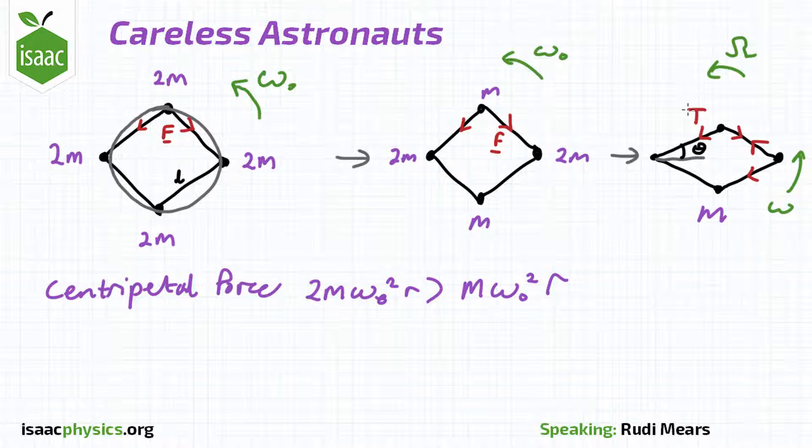From here, we just need to consider the centripetal force on each astronaut, and think about what needs to happen for the rotation to be stable.